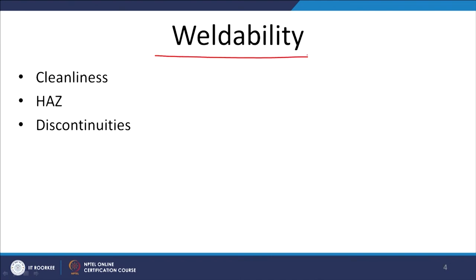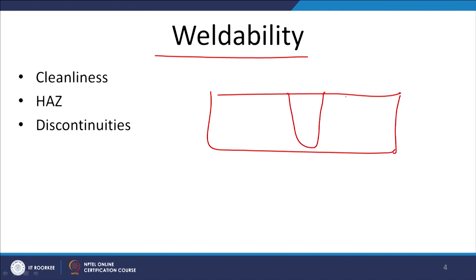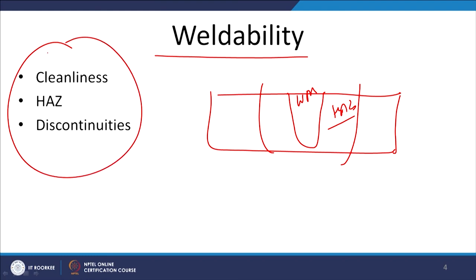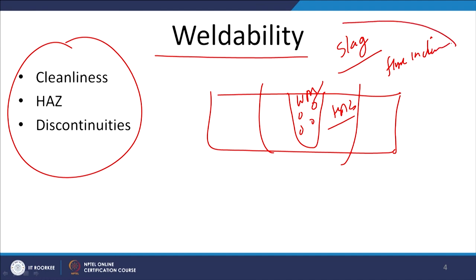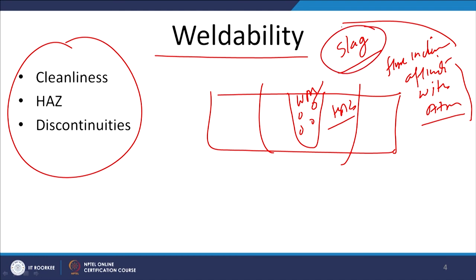Since the weldability of metals considers the properties of the weld metal as well as the heat affected zone, we need to consider three aspects: whether the weld metal is clean or not — meaning it is free from slag or flux inclusions. That will depend upon the kind of affinity the weld metal has with atmospheric gases. Metals having greater affinity with atmospheric gases will have a greater tendency for formation of oxides and nitrides, and to take care of them more slag is formed.